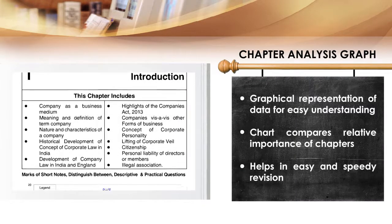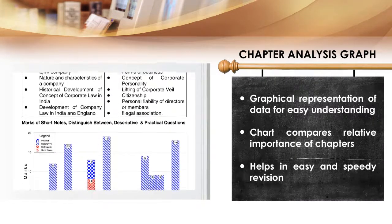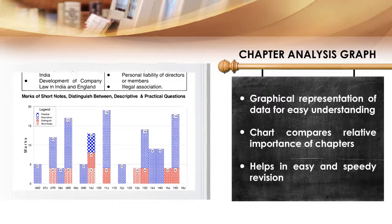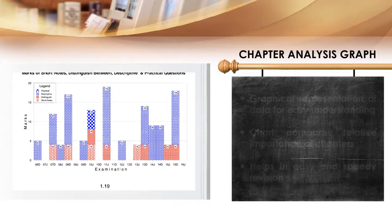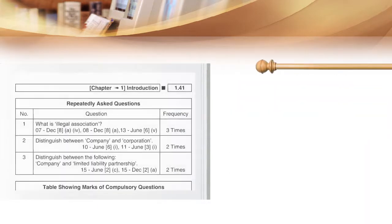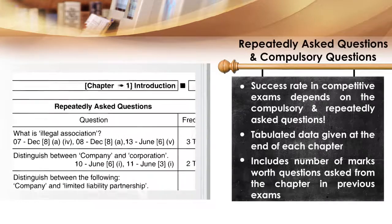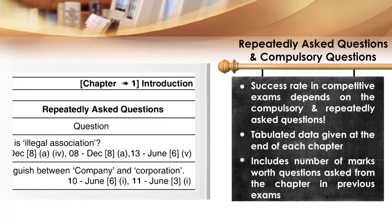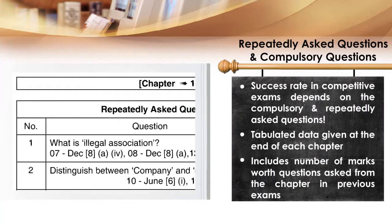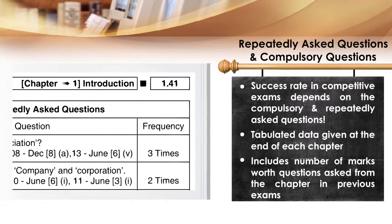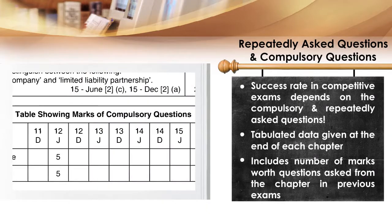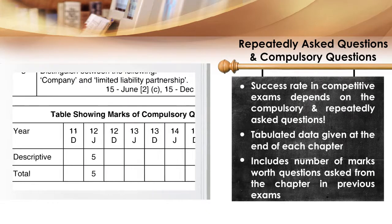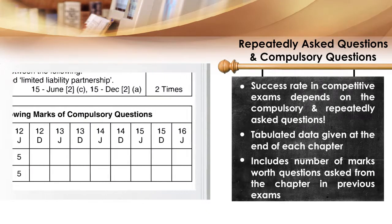The chapter analysis graph at the beginning of every chapter shows the distribution of marks among different categories of questions. Acing the compulsory questions on any paper is the key to success in exams. To help you gauge the importance of chapters based on the number of compulsory questions, a comparative table is provided with data from the last ten examinations.